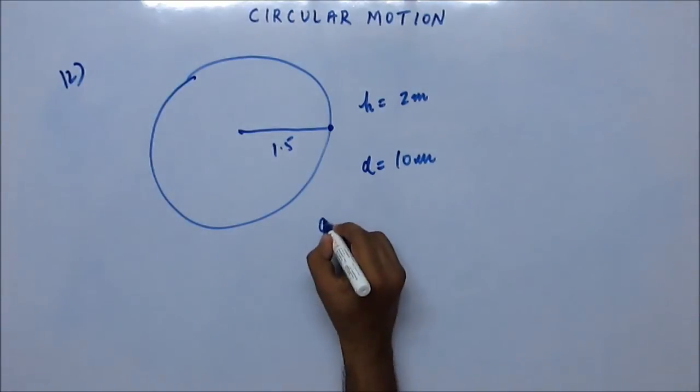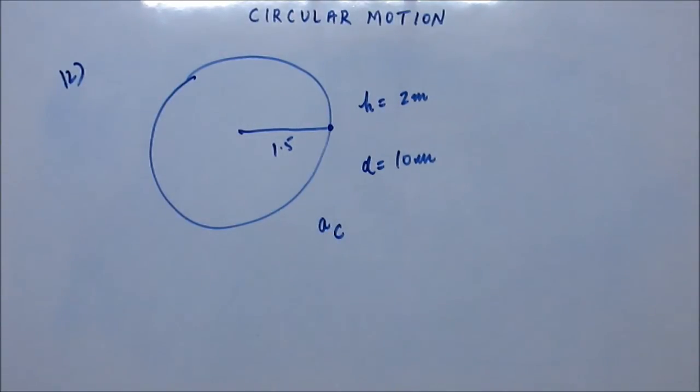They are asking, what was the centripetal acceleration before the string was cut? Before the string was broken, when it was undergoing a uniform circular motion, then what was the centripetal acceleration? So it is a good problem, very conceptual, basic problem. So try your hand on this and see what you are getting.